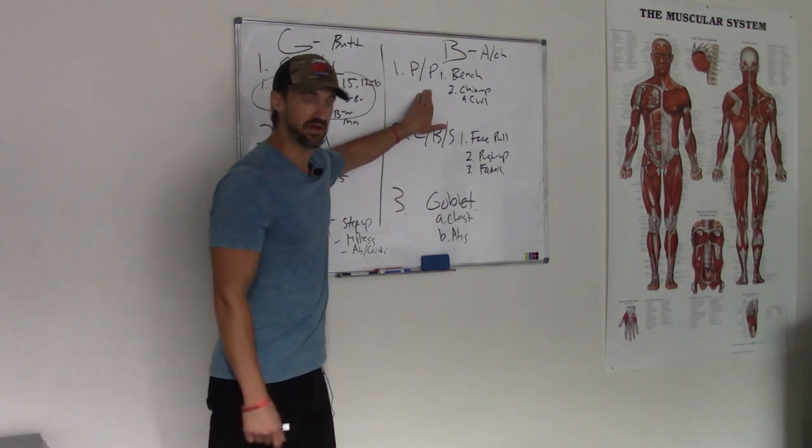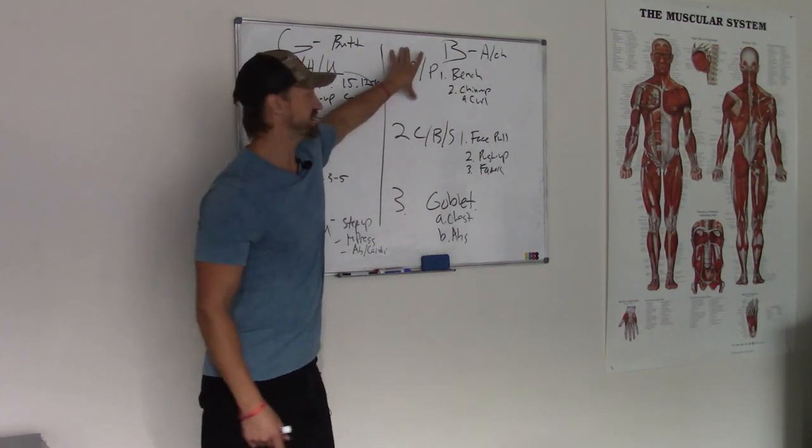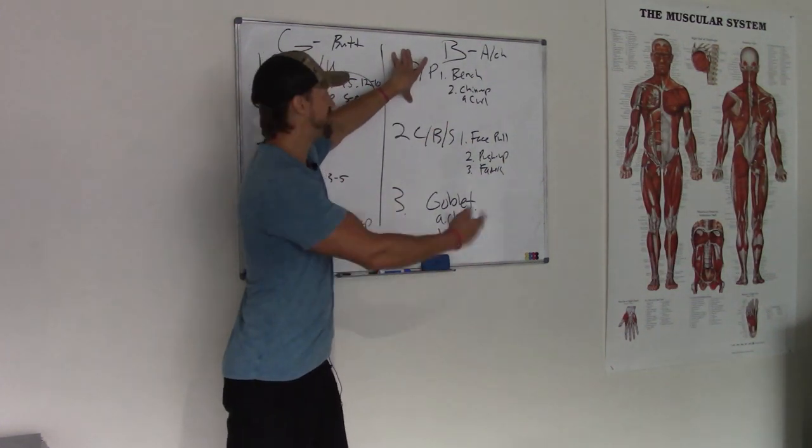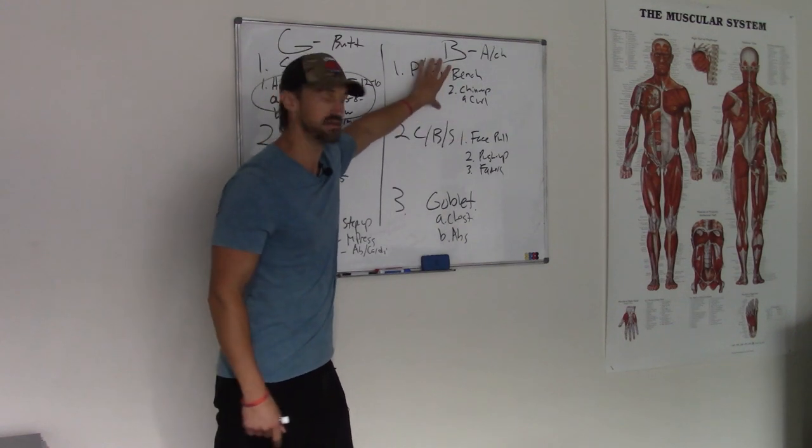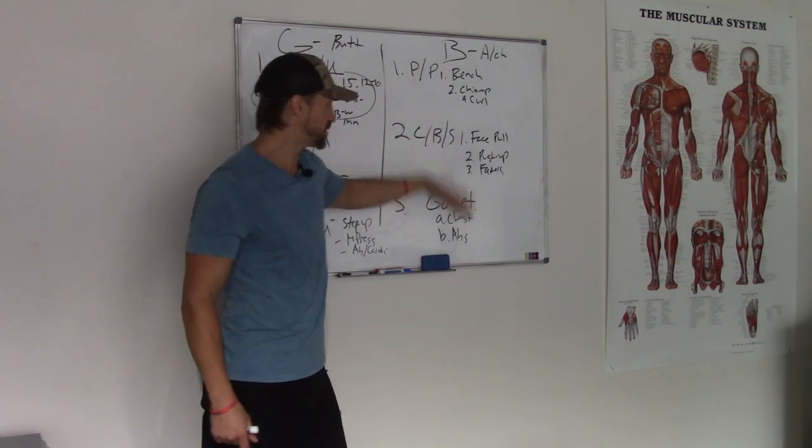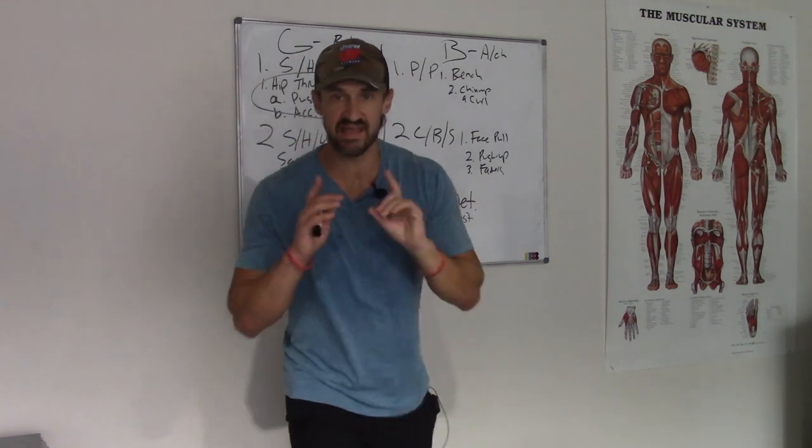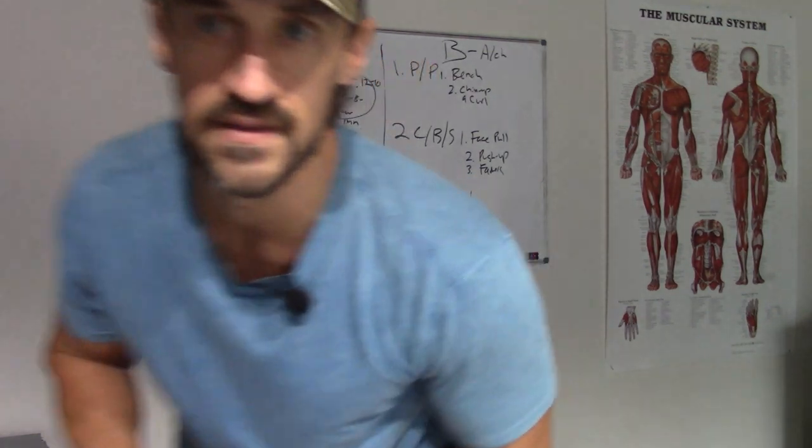Guys generally suck at cardio. Put it at the end. Start out kind of easier. Stuff they're more comfortable with. Bench press. Chin up curl. Three rounds. Next one. Face pull push up farmers. Three rounds. Going to the last one. This will take you 60 minutes. That's how you program it in under five minutes.